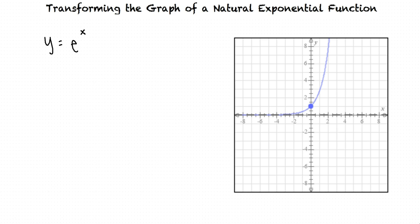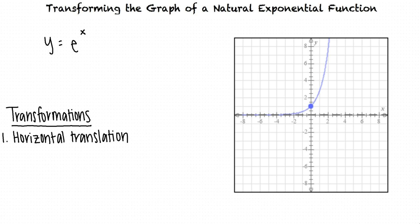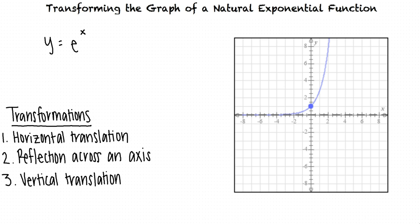We can transform this graph by altering the function. We can translate the graph horizontally, reflect the graph across an axis, and translate the graph vertically. By convention, we typically perform these transformations in the order listed.